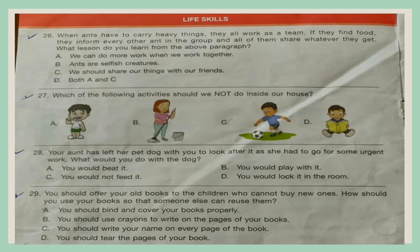Question 29. You should offer your old books to children who cannot buy new ones. How should you use your books so that someone else can reuse them? A. You should bind and cover your books properly, B. You should use crayons to write on the pages, C. You should write your name on every page, D. You should tear the pages of your book.